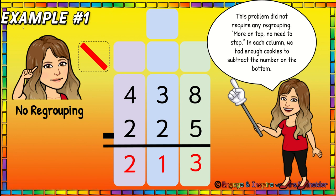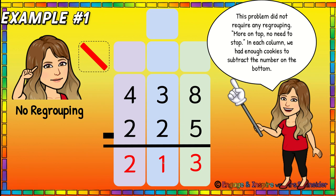So let's look at these different examples. Example number one: this problem does not require regrouping. If there's more on the top, no need to stop. In each column there's enough cookies on top that you can just give away however many are needed on the bottom. Eight is more than five, so if you have eight cookies you can give five away and still have three left. Then you move to the tens place — if you have three, give two away and you still have one. And in the hundreds place, if you have 400 cookies and give 200 away, you'll still have 200. You did not need to regroup any hundreds to the tens because there was more on the top.